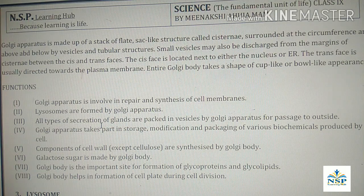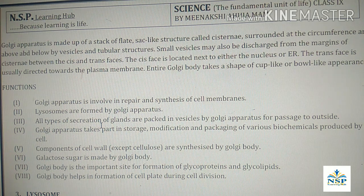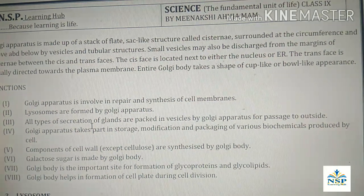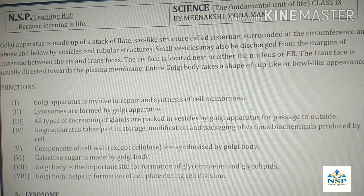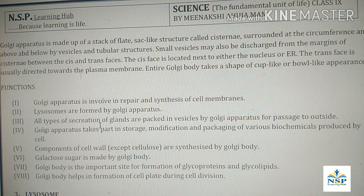Golgi apparatus is made up of a stack of flat sac-like structures called cisternae, surrounded at the circumference by vesicles and tubules. Small vesicles may also be discharged from the margins of the cisternae between the cis and trans face.